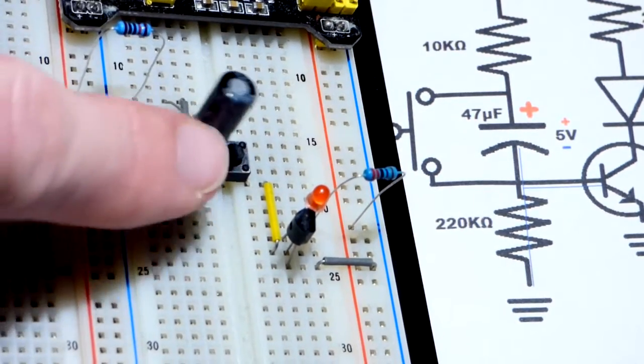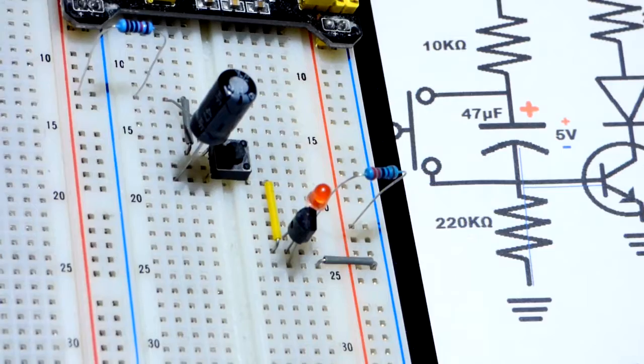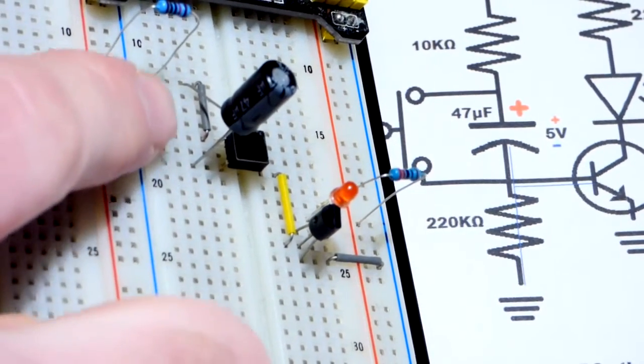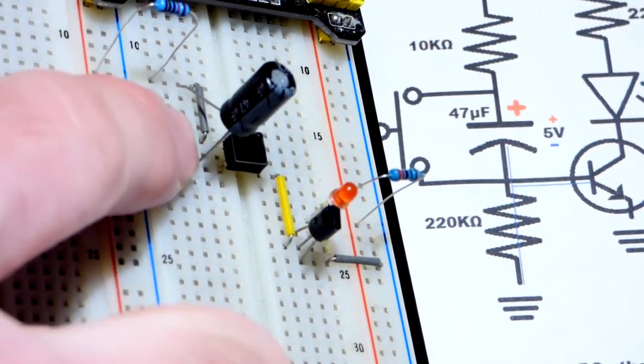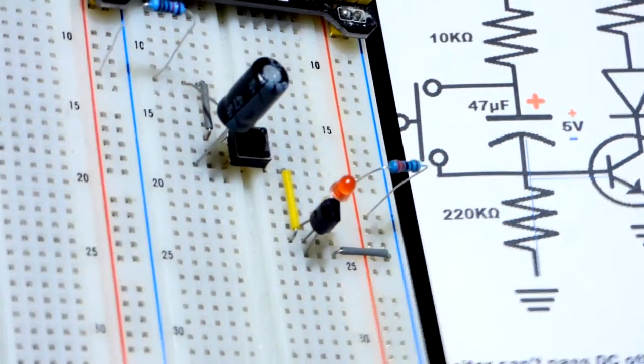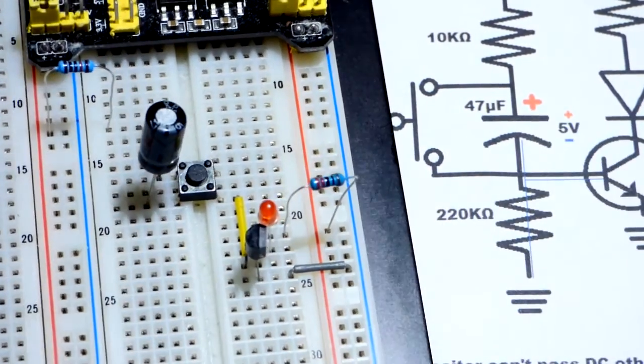This is an electrolytic capacitor. This side needs to be more negative, and that goes to one side of the switch. And then this side needs to be more positive. As you can see, there's a jumper that connects it to the other side of the switch. So we have them parallel there.